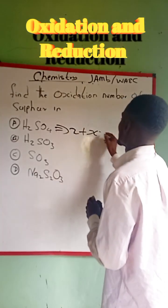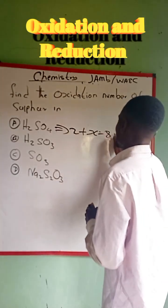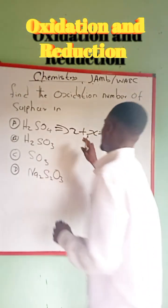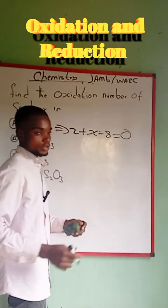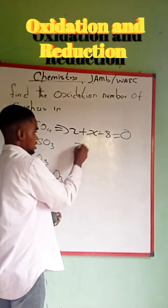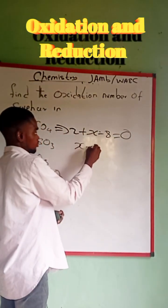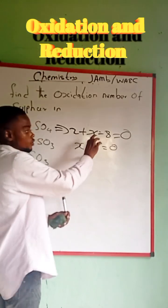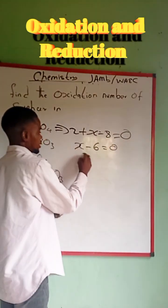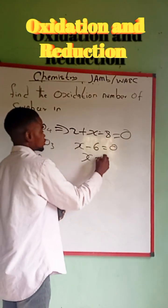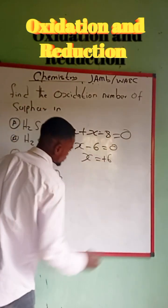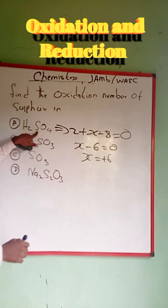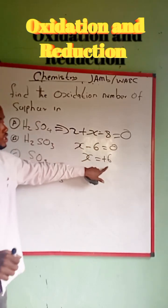We eliminate the positive sign and set the expression equal to zero. Two minus eight gives us S minus six equals zero, so S equals positive six. The oxidation of sulfur in this first compound is positive six.